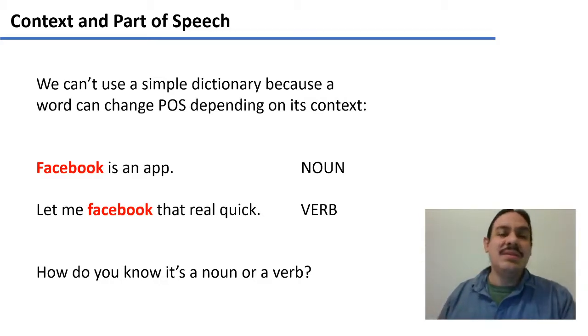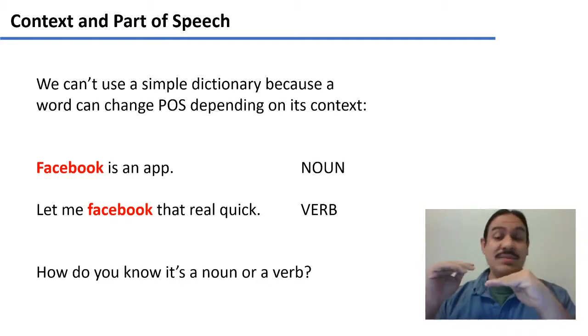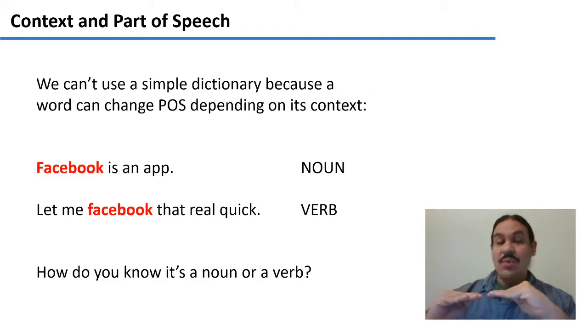On the other hand, Facebook can be a verb. Let me Facebook that real quick. It's a verb because you can have it behave like a verb. You can have the word she Facebooks. She walks. She is Facebooking. She is walking. She Facebooked. She walked. So it can adopt the behavior of a verb as well. So things that are nouns in English can also behave like verbs and you can go back and forth.